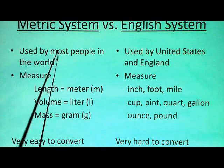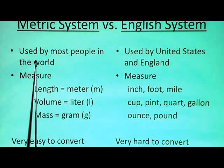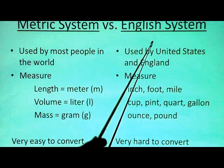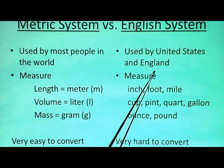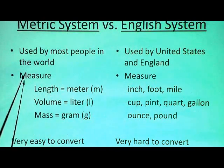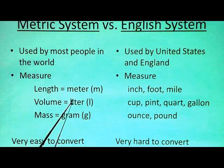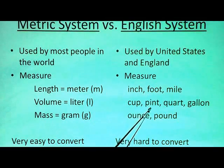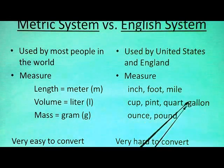Let's review. What's the difference between metric versus English? The metric system is used by most people in the world, whereas the English system is pretty much used here in the United States and also England — that's why we call it English. In the metric system we have meters for length, liters for volume, and grams for mass. In English, we have inch, foot, and miles for length; cup, pint, quart, or gallon for volume; and ounce and pound for mass.